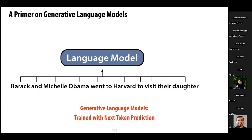Let's start with background on state space models. First, a primer on how generative language models are trained. These days, GPT-style models are all trained on next-token prediction. They'll get some sentence like 'Barack and Michelle Obama went to Harvard to visit their daughter' and the language model has to figure out what the next word is.